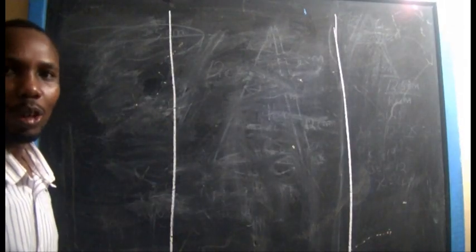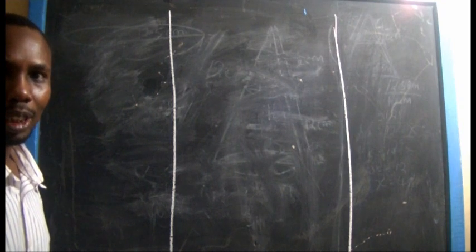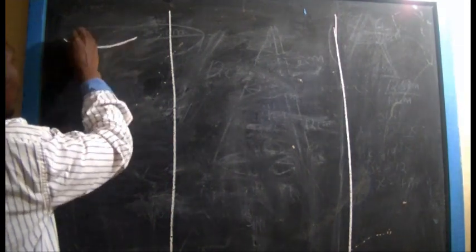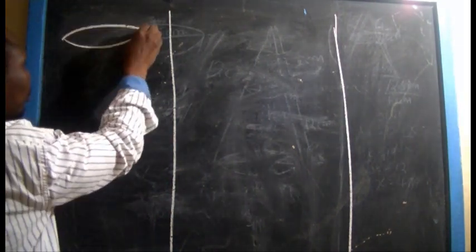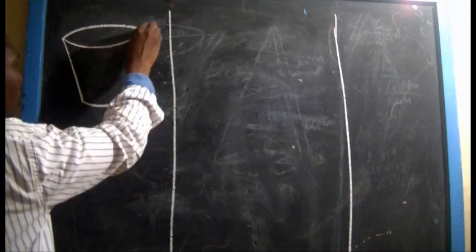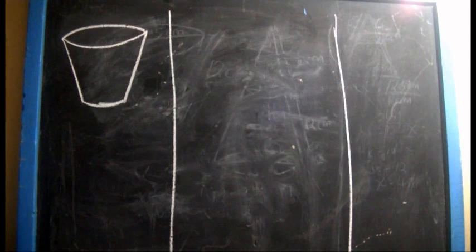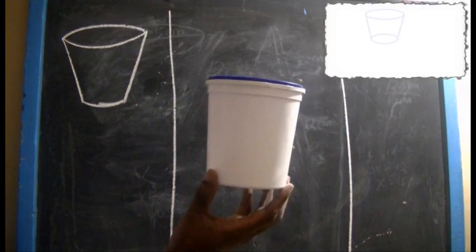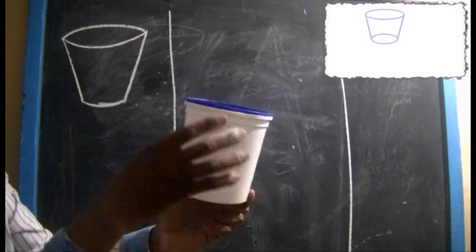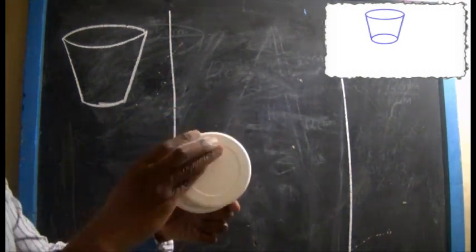In this tutorial, we're going to learn about the volume of a frustum of a cone. Let me draw the diagram — the shape of a cone. This is how a cone looks like. You notice that it has a bigger circle and a smaller circle.